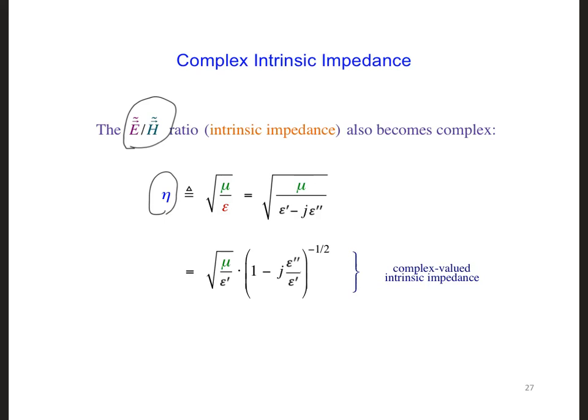And square root of μ over ε. Epsilon is complex now, so we're going to write that out. And once we simplify it, as you would normally see it written like this in table 7-1. So this is a complex value. That means our intrinsic impedance of the material is complex. What does it mean to have a complex impedance for our material?